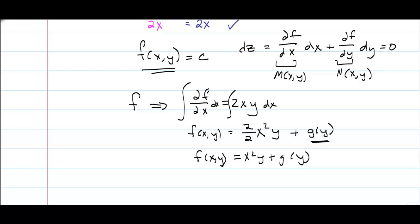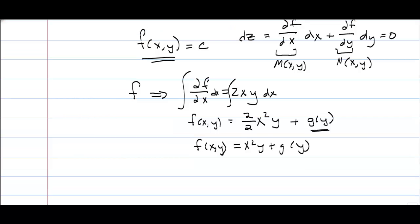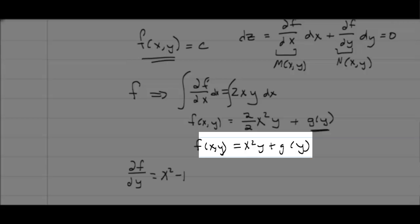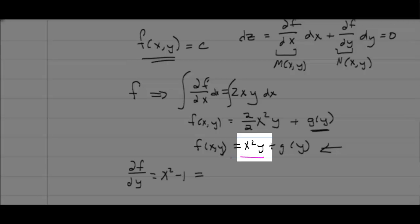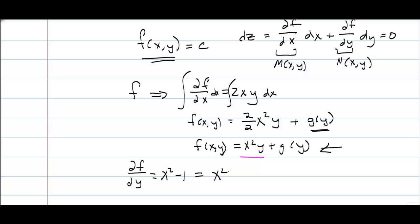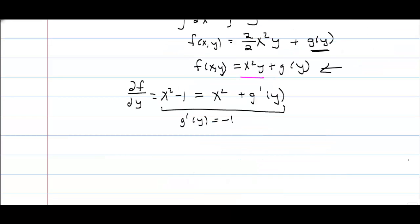Now I use N to find g(y). Taking the partial of f with respect to y and setting it equal to N(x,y) = x² - 1: the partial of x²y with respect to y is x², plus g′(y). Setting this equal to x² - 1, I can see g′(y) = -1. Integrating both sides gives g(y) = -y.